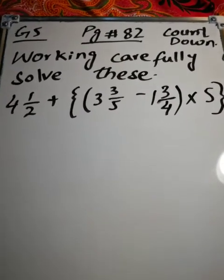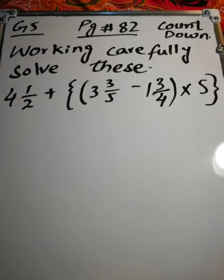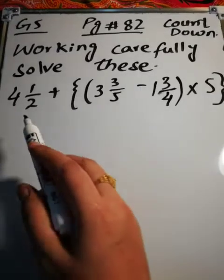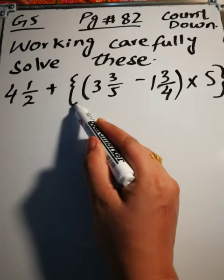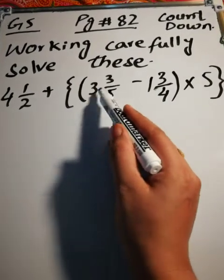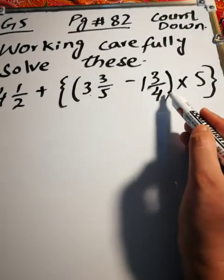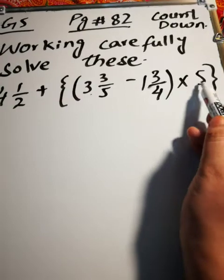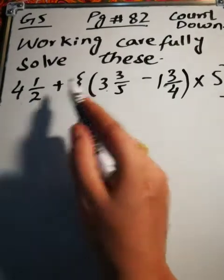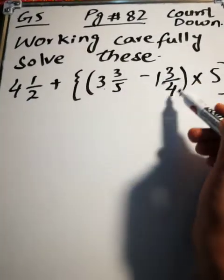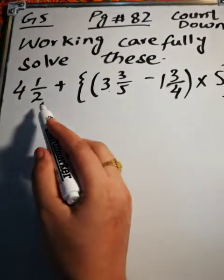Bismillahirrahmanirrahim, assalamu alaikum, Grade 5. We will revise page number 82 and the question is: working carefully, solve these. 4 and 1/2 plus, in curly brackets and round brackets, 3 and 3/5 minus 1 and 3/4, round bracket close, multiply 5, curly bracket close. Girls, see here, this is in the mixed form, this is in the mixed form, this is in the mixed fractional form.